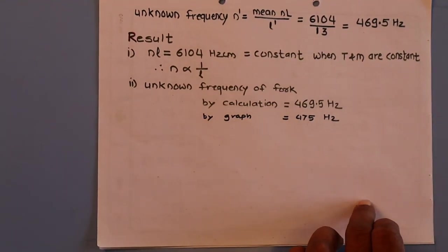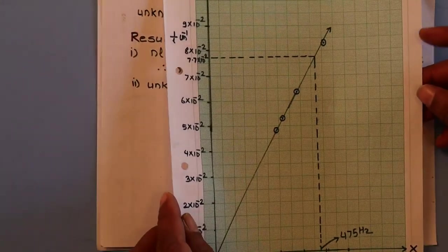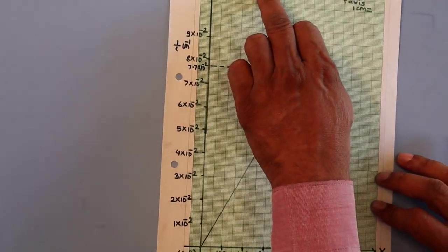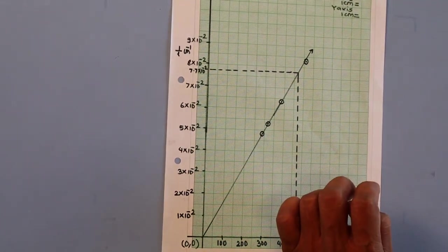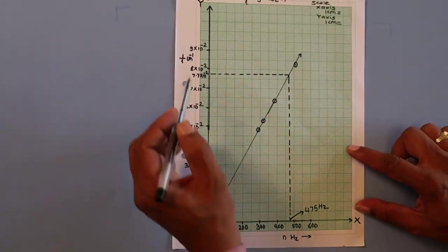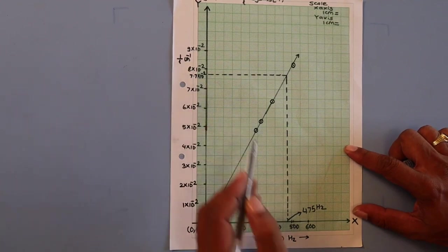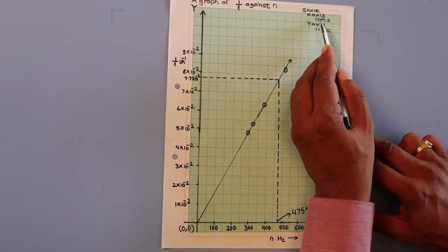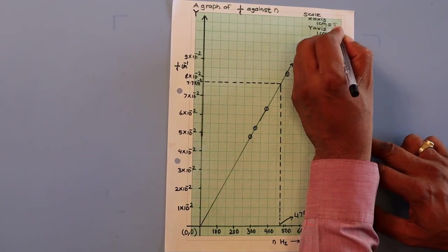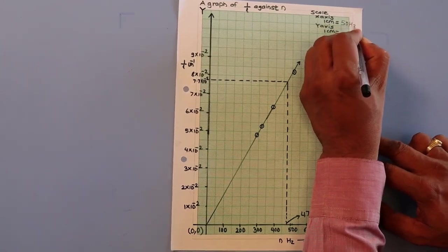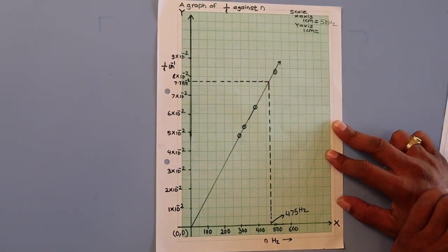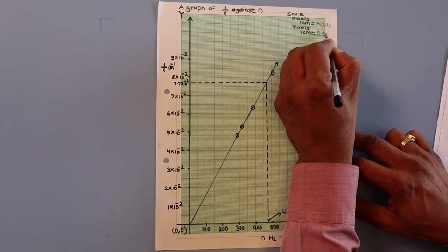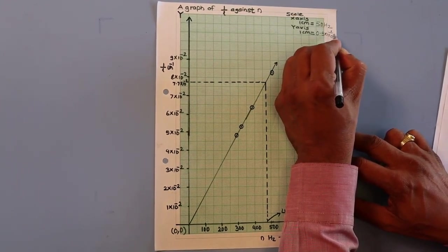To find the unknown frequency from the graph, we plot a graph of 1/L against N, with 1/L along the y-axis and frequency along the x-axis. We take a suitable scale: on the x-axis, 1 cm = 50 Hz, and along the y-axis, 1 cm = 0.5 × 10⁻² cm⁻¹.